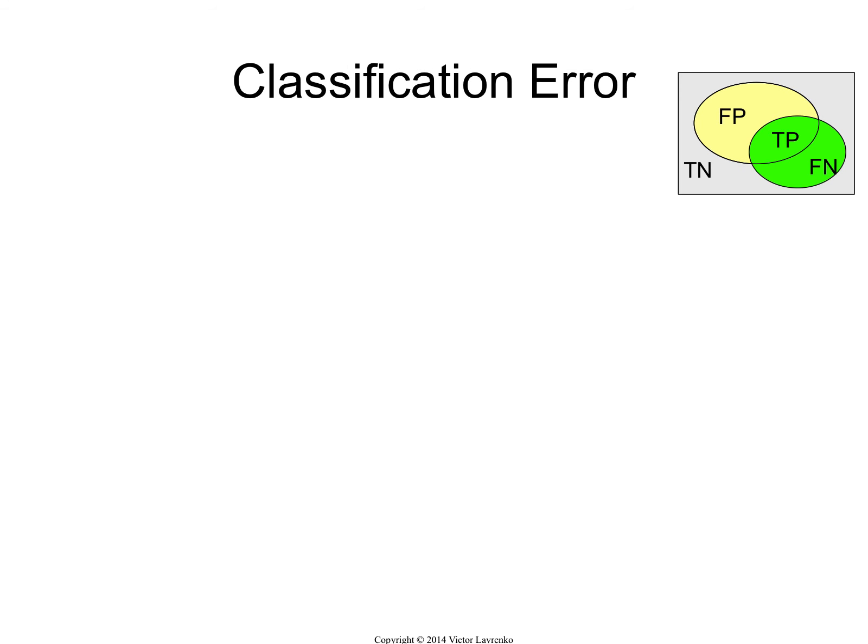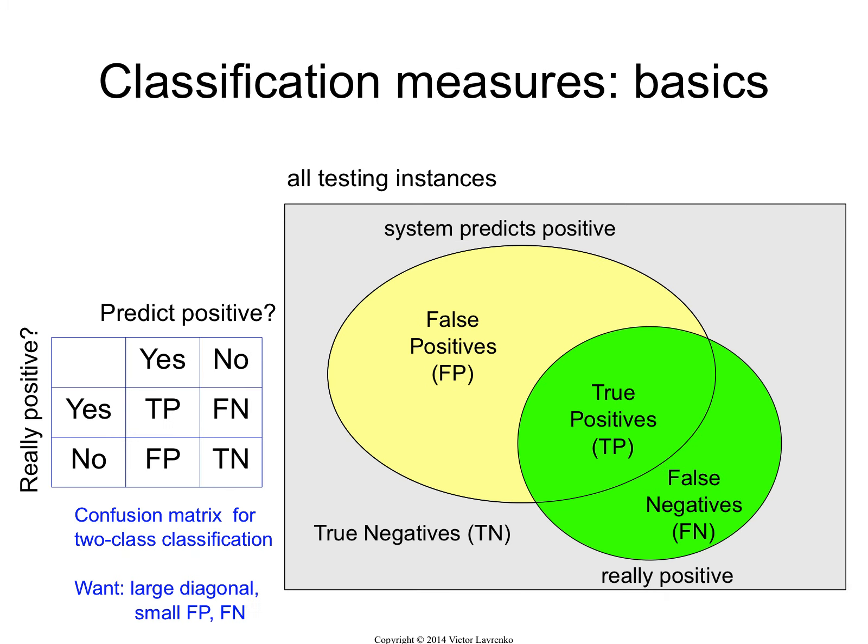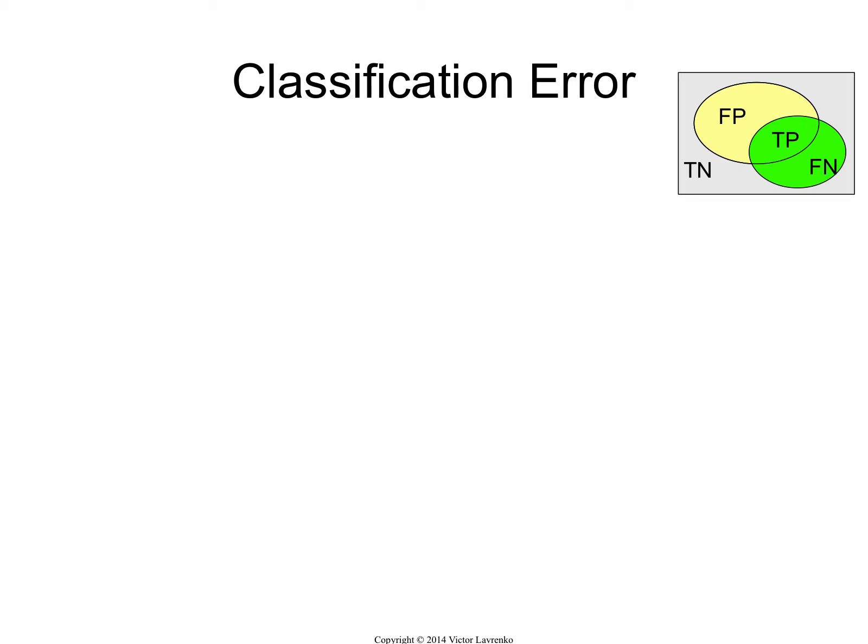So these four numbers — the true positives, the false positives, the true negatives, and the false negatives — they are the building blocks. Now we're going to build a bunch of different metrics and evaluation measures out of these building blocks.